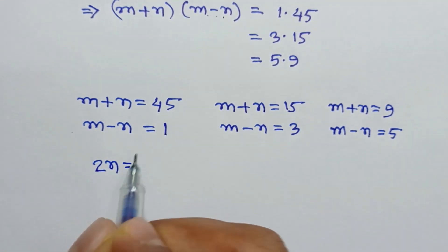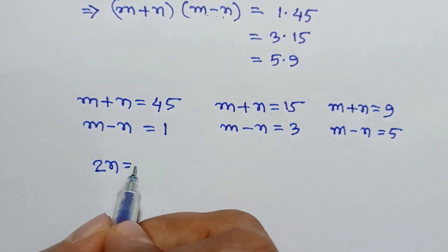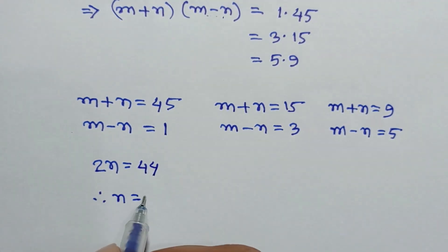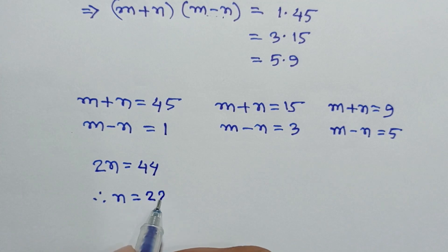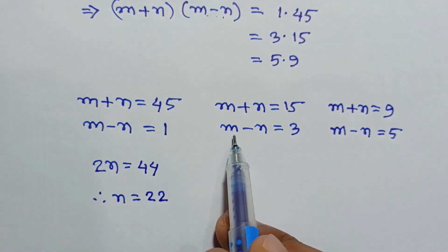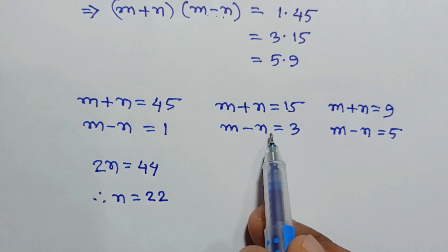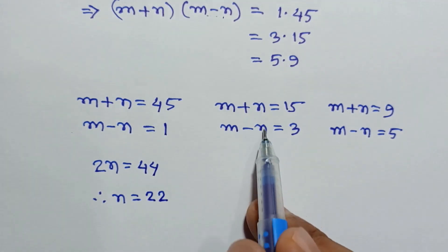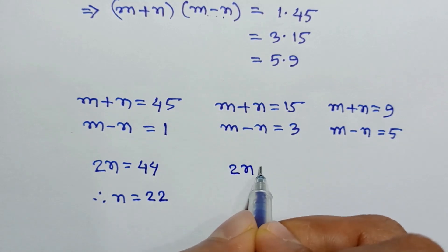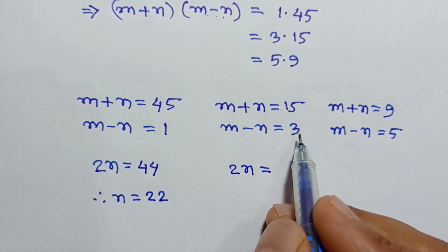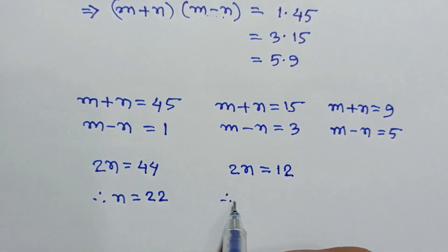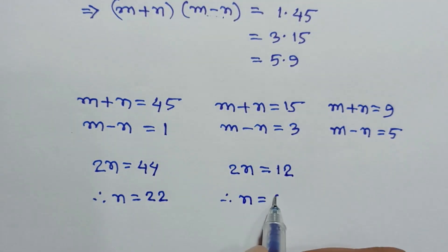Subtracting the equations for the first pair, m cancels out and 2n is equal to 45 minus 1, which is 44, so n is equal to 22. Subtracting the equations for the second pair, 2n is equal to 15 minus 3, which is 12, so n is equal to 6.